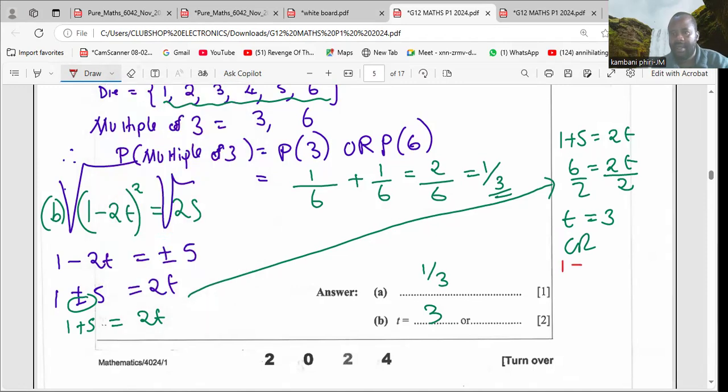Or we use a minus here. One minus 5 equals 2t. Negative 4 equals 2t. We divide by 2, so t equals negative 2. That's it.